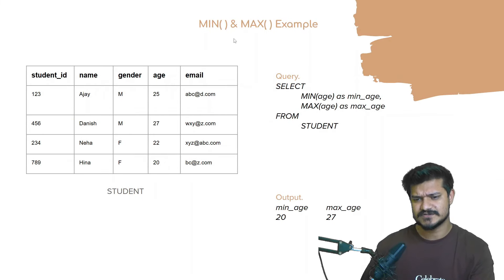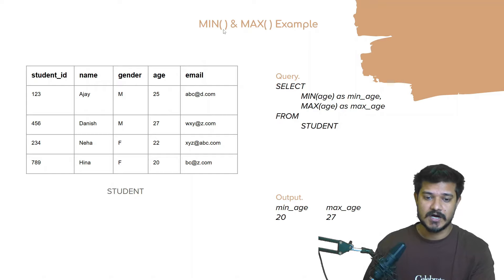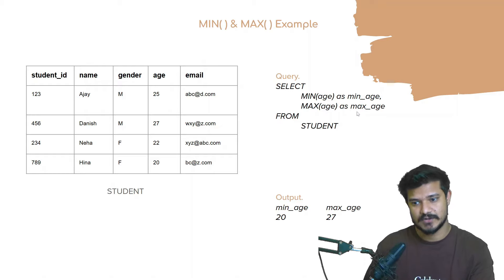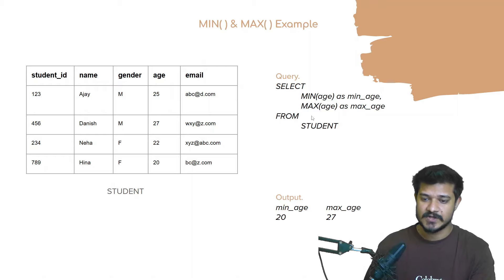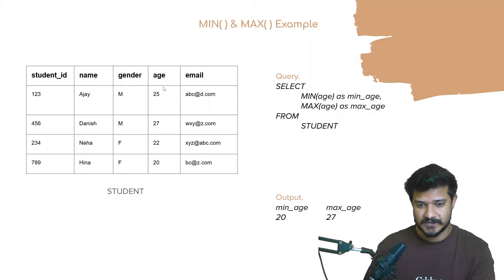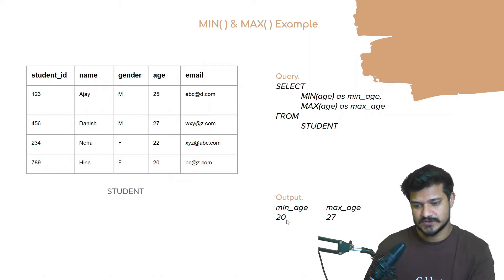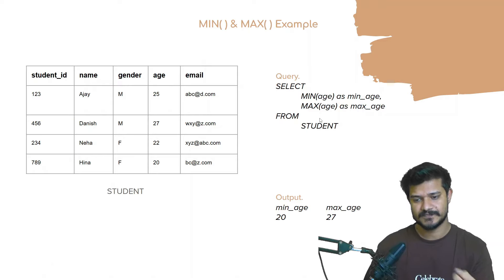Let's start with the aggregate functions min and max. Min calculates the minimum value and max calculates the maximum value — each takes a single parameter, which is the column name. For example, in this query: SELECT MIN(age) AS min_age, MAX(age) AS max_age FROM the student table. Since we haven't set any WHERE condition, it goes through the whole table, scans the age column, and returns minimum 20 and maximum 27.